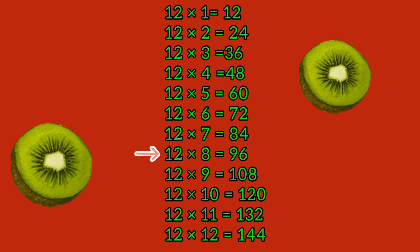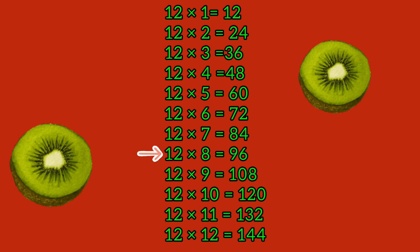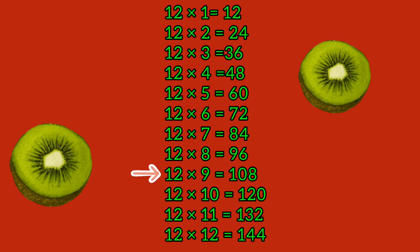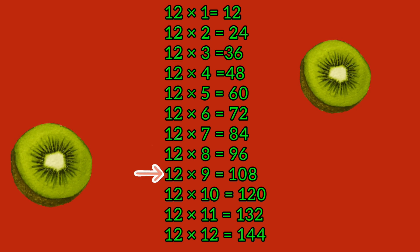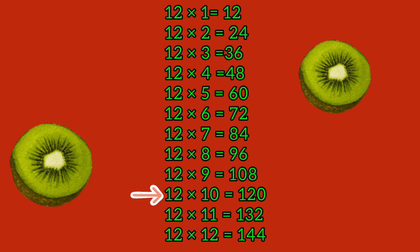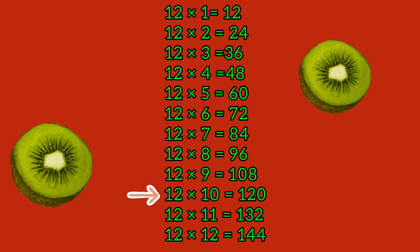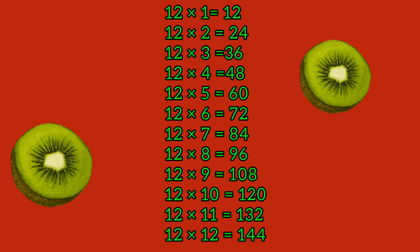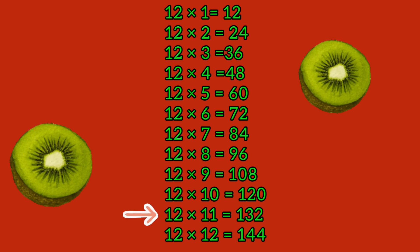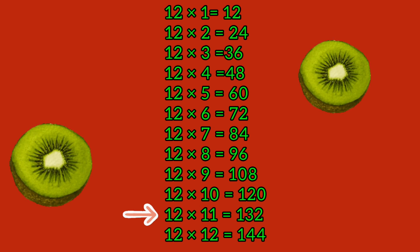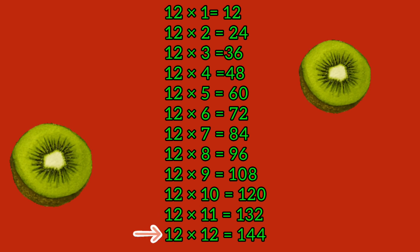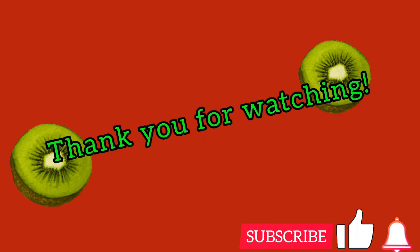12 times 8 equals 96. 12 times 9 equals 108. 12 times 10 equals 120. 12 times 11 equals 132. 12 times 12 equals 144.